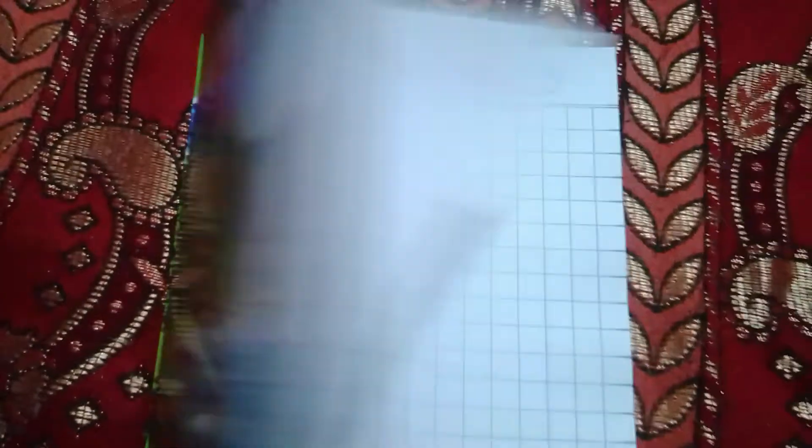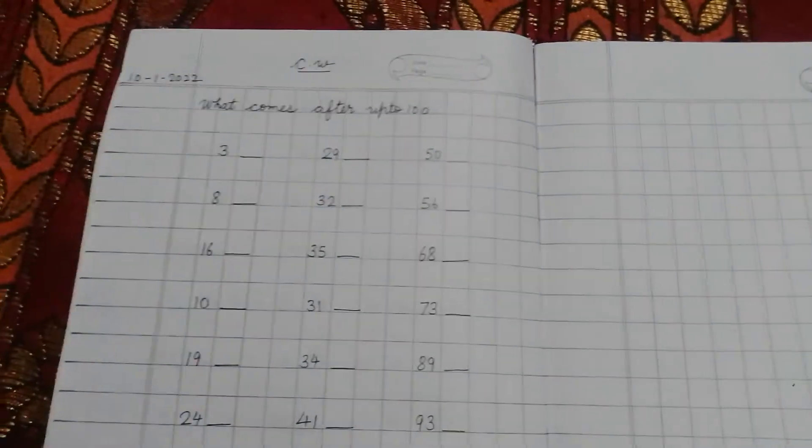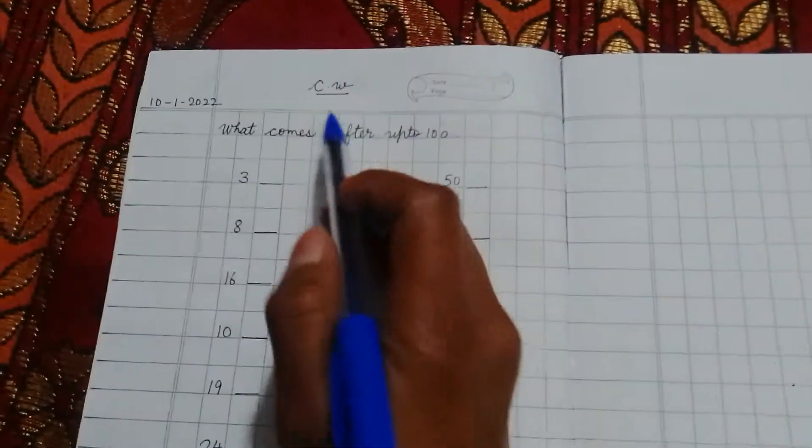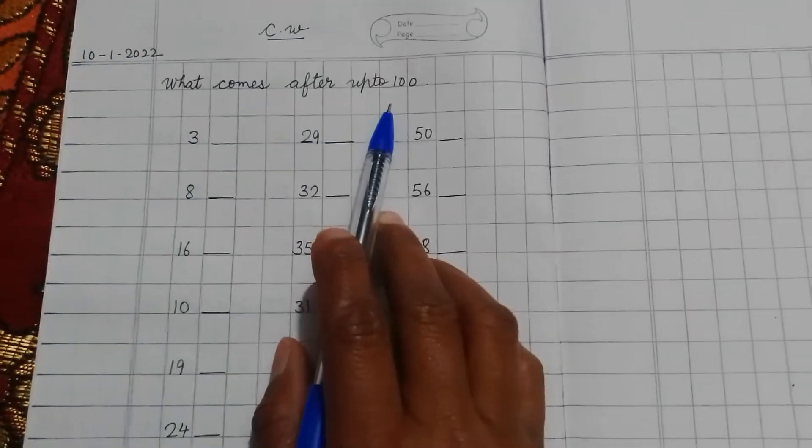Take out your math notebook and open it. On the top of your page write CW, in the corner write the date then after matter you will write.